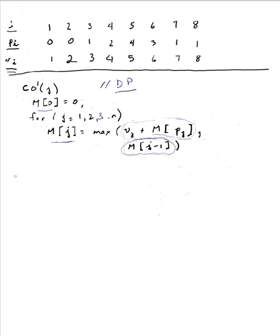Let's go ahead and compute our M array. We'll label the indexes up here. For M of 0, we initialize at 0. Now for j equals 1, M of 1 is the max of: weight of 1 is 1, plus M of p(1) — p(1) is 0, so M of 0 is 0 — or M of 1 minus 1, which is M of 0 = 0. So the solution is 1. If I only consider the set containing just interval 1, my optimal solution has value 1.